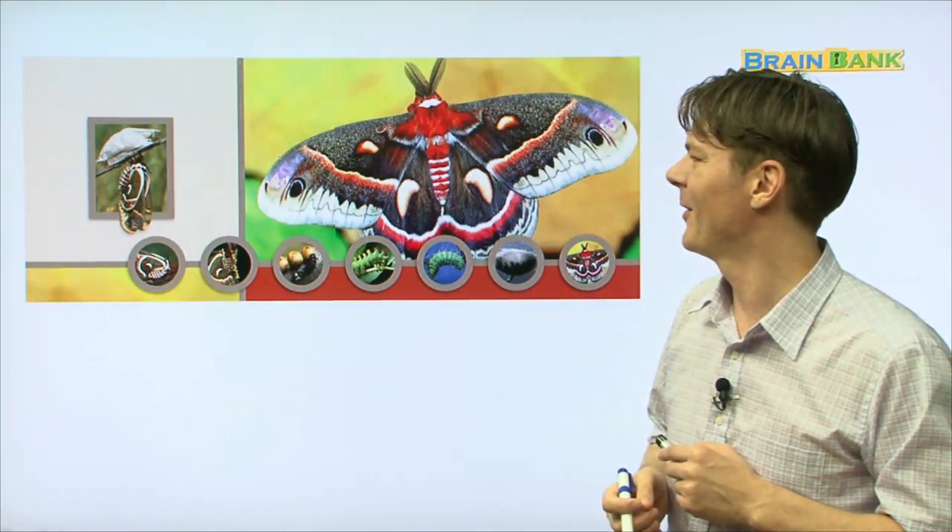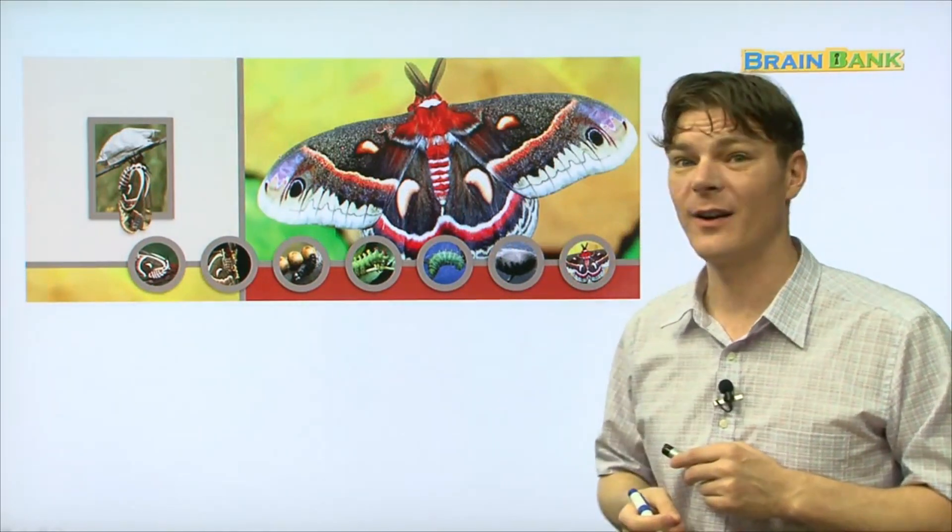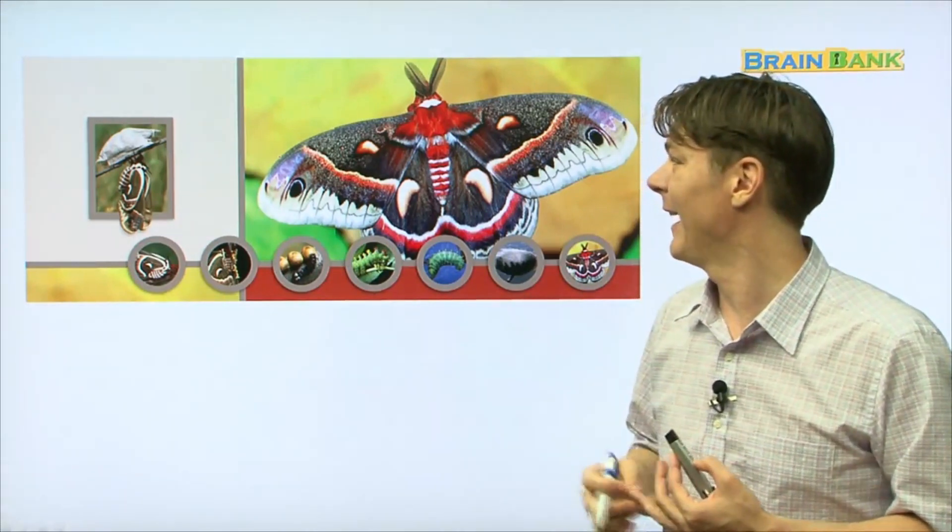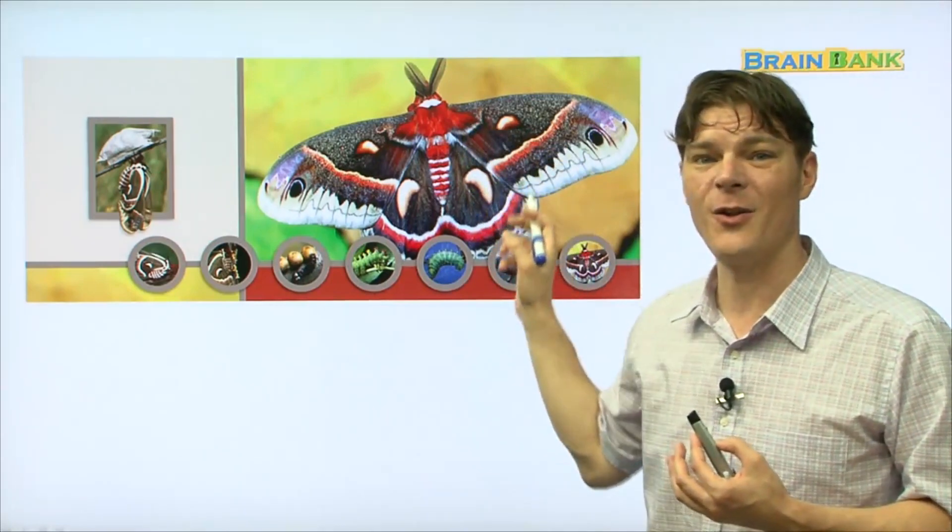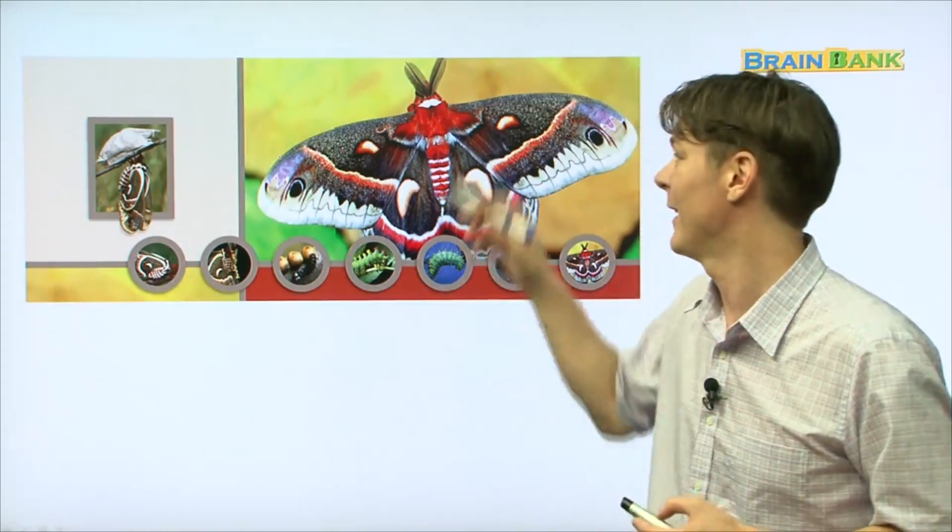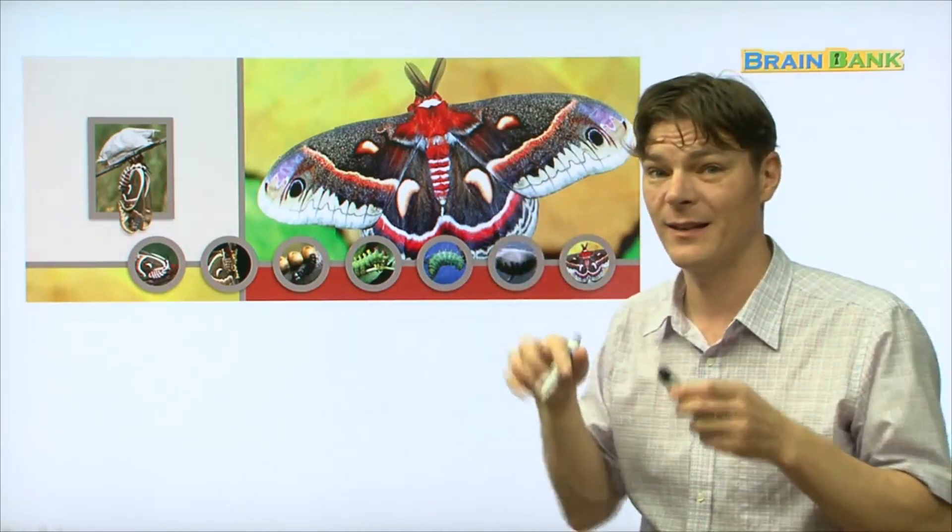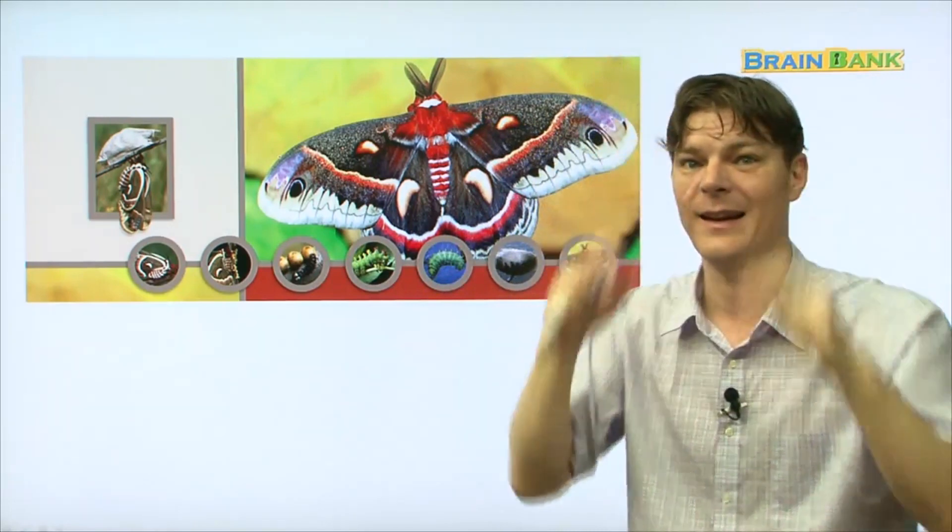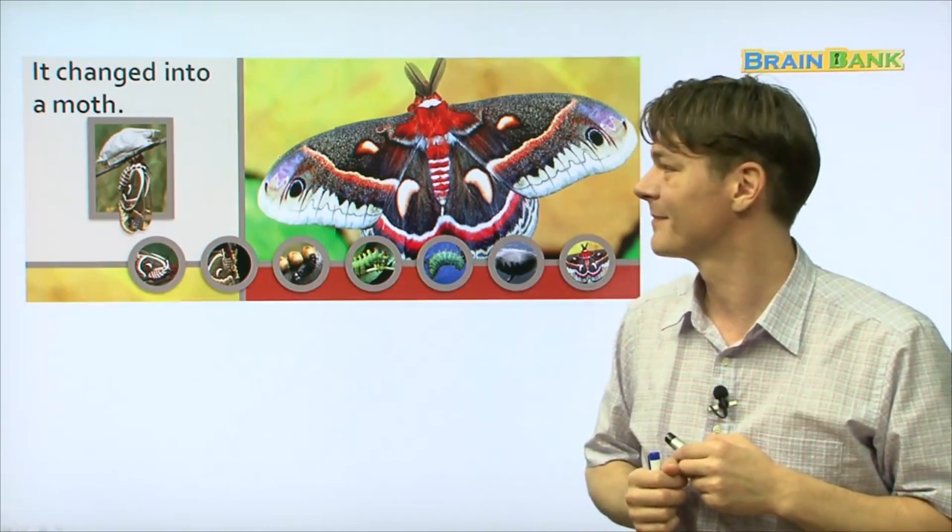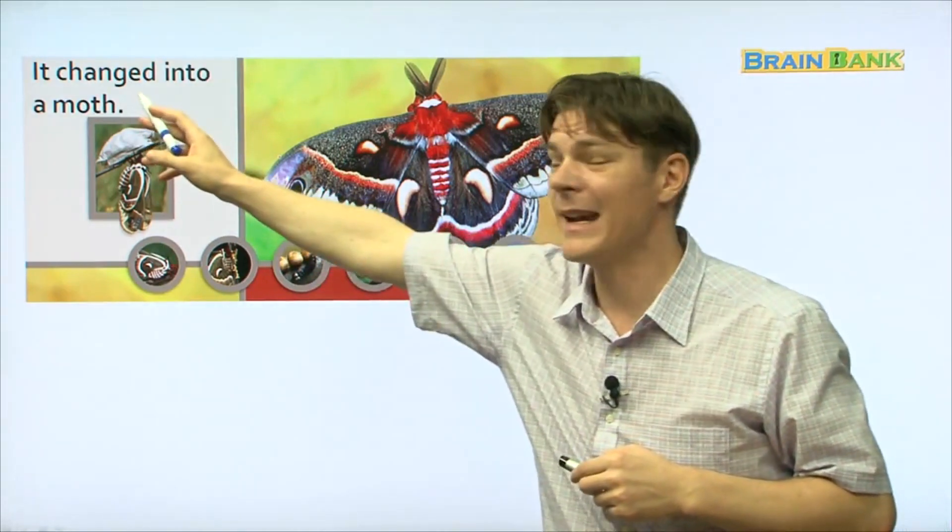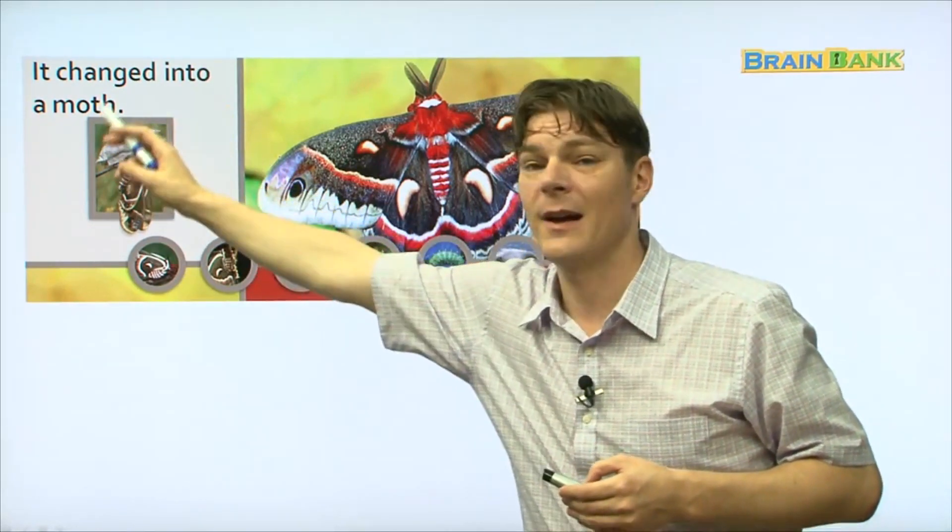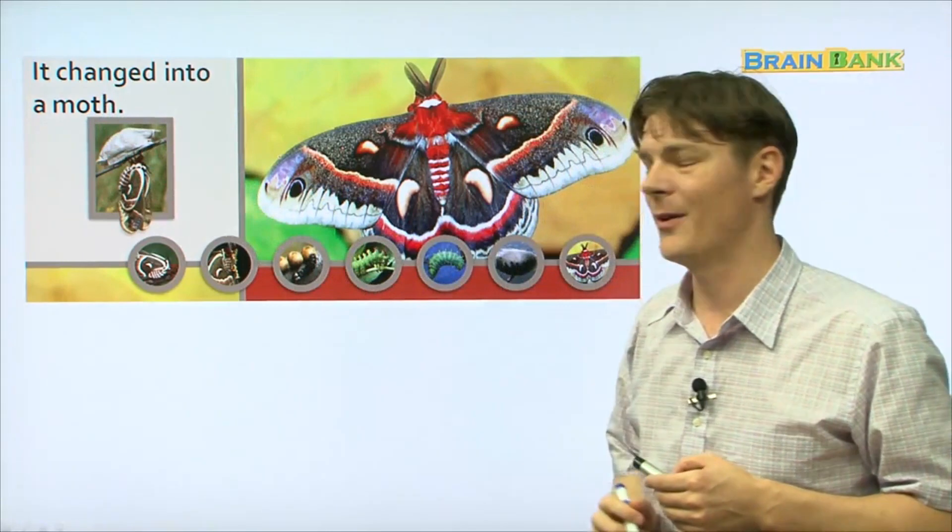And now, you can see that the caterpillar has become a beautiful moth. Wow. Look at it. And it has all the different colors and all the different parts of the moth that we saw at the very beginning of the book. It has two wings, some feelers, some eyes, and some legs. Wow. Very, very interesting. It changed into a moth. Everyone repeat with me. It changed into a moth. Wow. That's amazing.